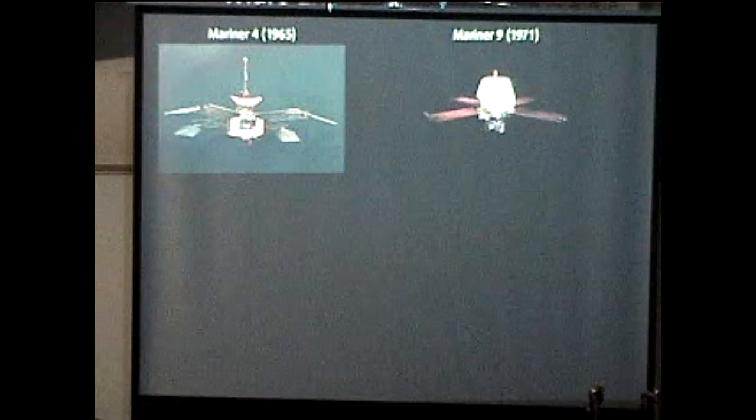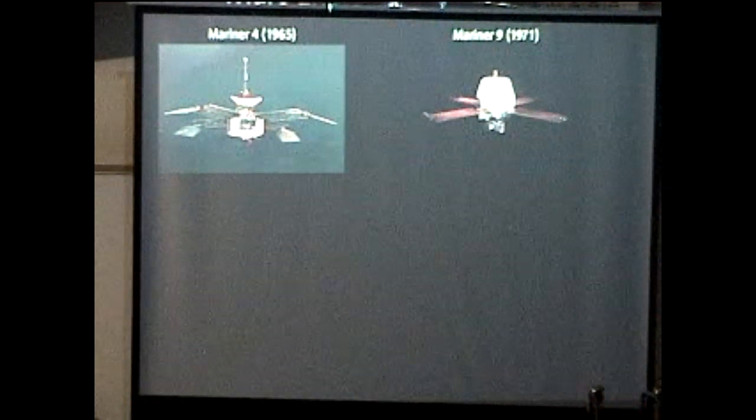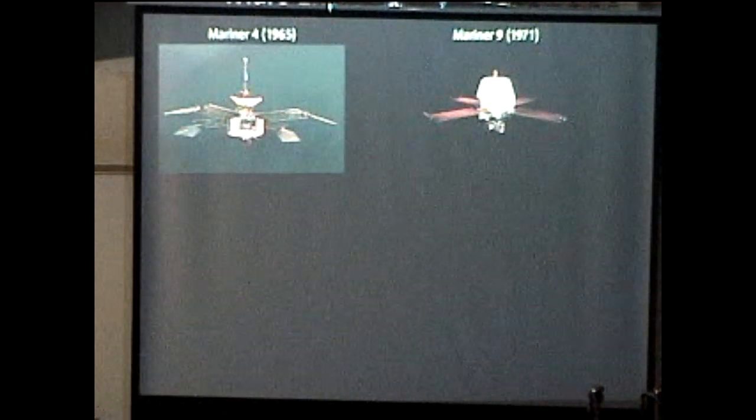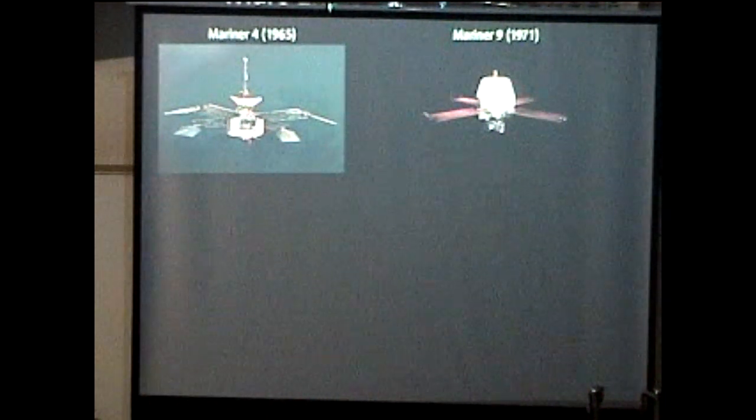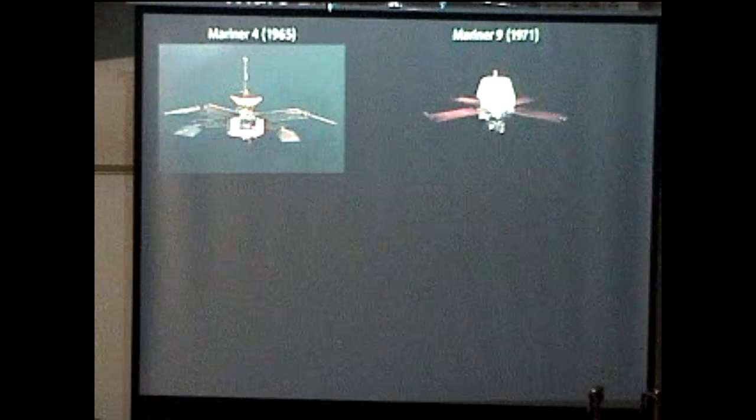Mars explorations so far. There was the Mariner 4 probe, which was a flyby of the planet Mars that flew by in 1965. That was the first one that actually successfully flew by the planet and took pictures and sent them back. Mariner 4 was the first to fly by and successfully take pictures of Mars. There was Mariner 9 in 1971, which was the first probe that actually went into orbit around Mars. It sent back quite a lot more pictures and gave us quite a bit more data than Mariner 4 did.